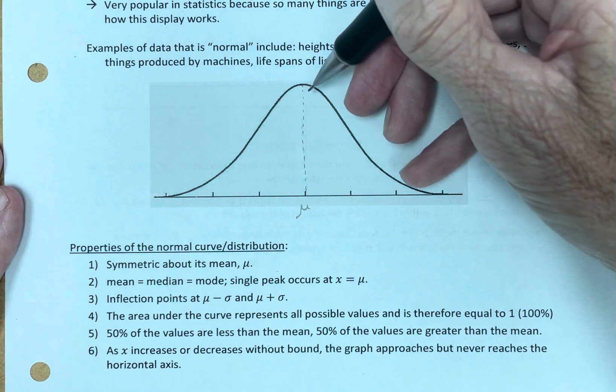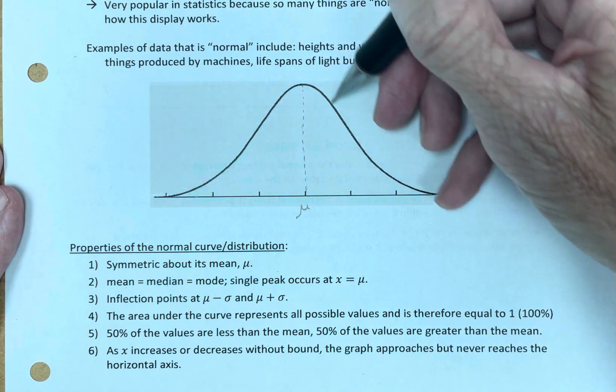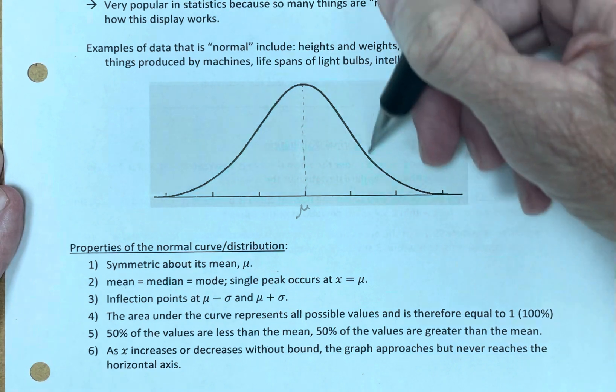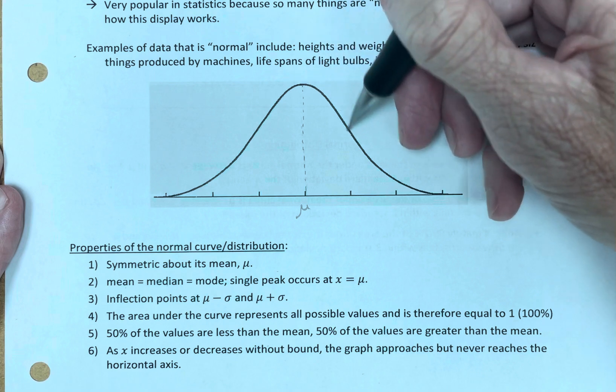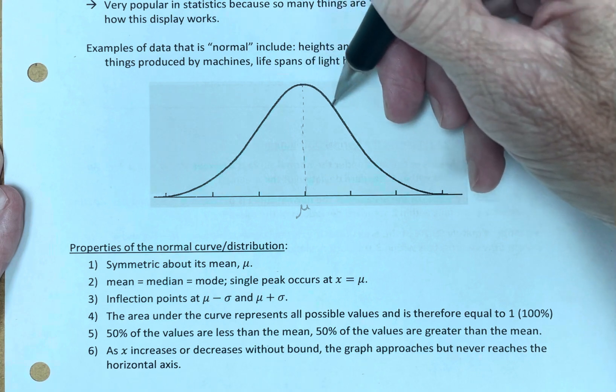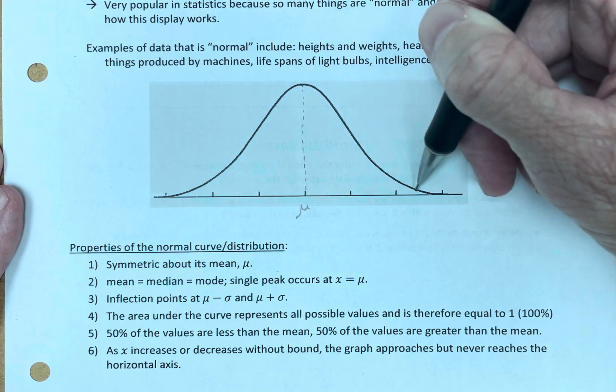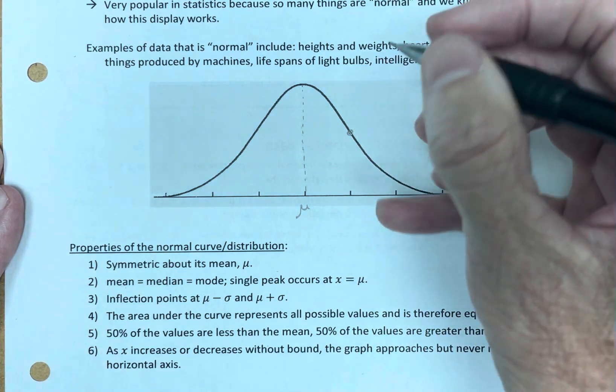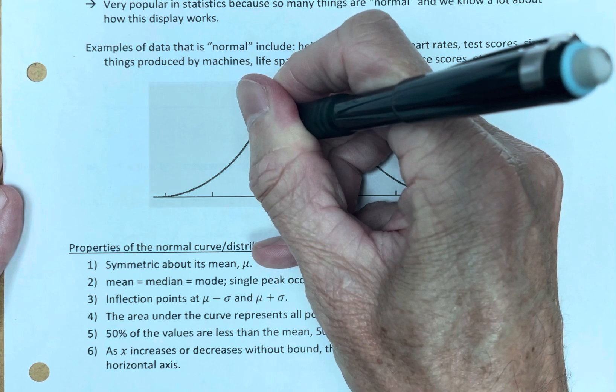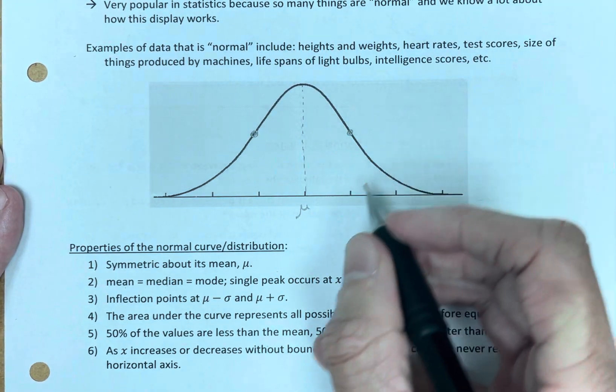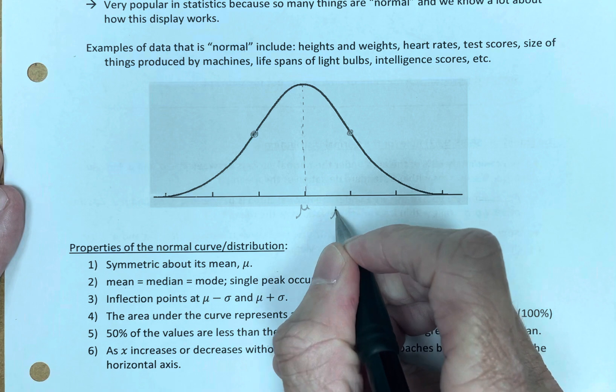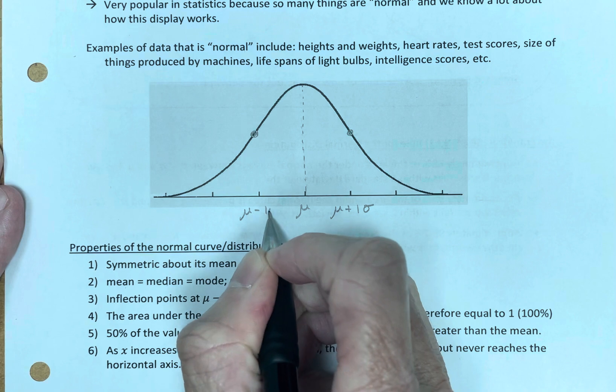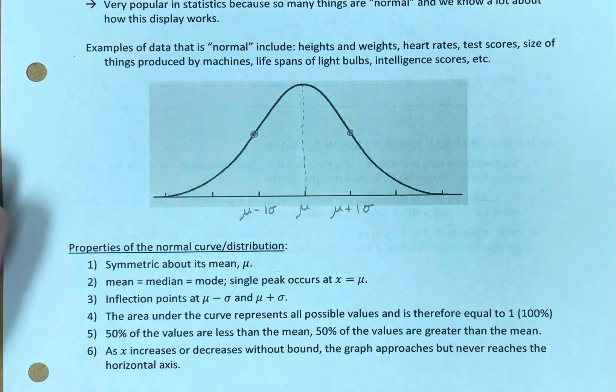Let's see here. Inflection points. The graph is concave down here, and then the graph becomes concave up. A little bit of calculus for you. The graph is opening down, and then the graph starts to open up. And that takes place right here. And it takes place right here. These are called inflection points.